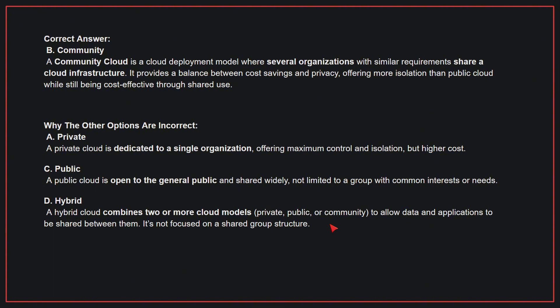Why the other options are incorrect: A — Private. A private cloud is dedicated to a single organization, offering maximum control and isolation, but at higher cost. C — Public. A public cloud is open to the general public and shared widely, not limited to a group with common interests or needs. D — Hybrid. A hybrid cloud combines two or more cloud models to allow data and applications to be shared between them; it's not focused on a shared group structure. Therefore, the correct answer is B.